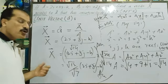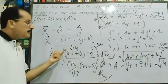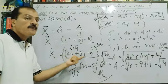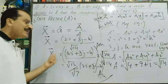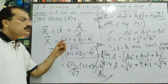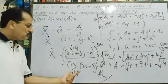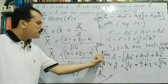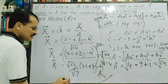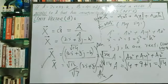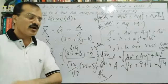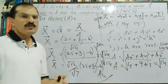To summarize the method: when you need a vector parallel to one given vector but with the magnitude of another, first find the unit vector of the direction vector — that gives you the direction. Then multiply by the magnitude of the second vector. The result has the magnitude of vector B but the direction of vector A.